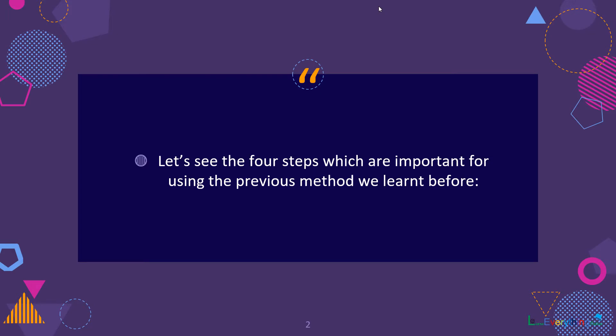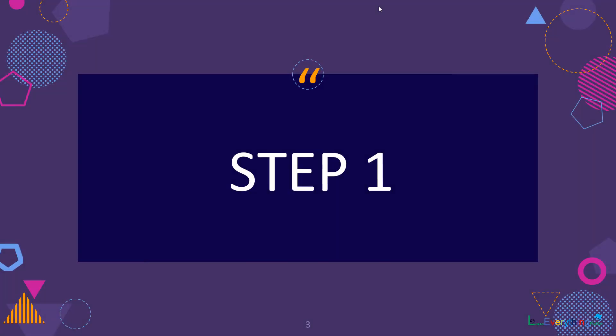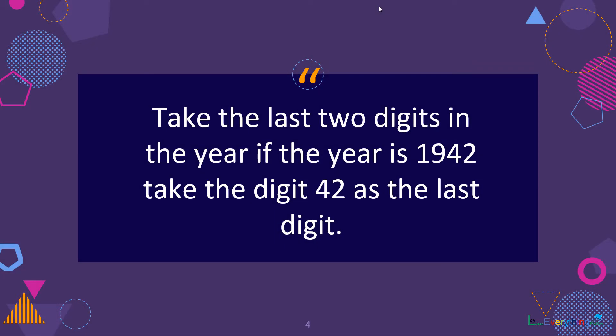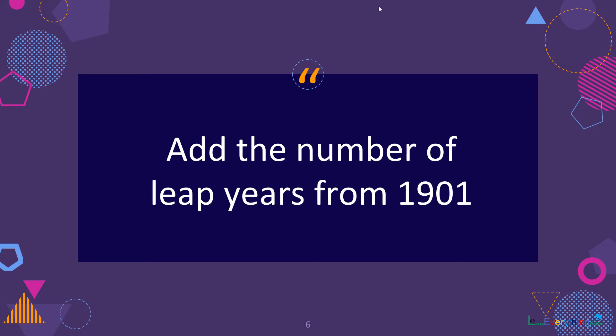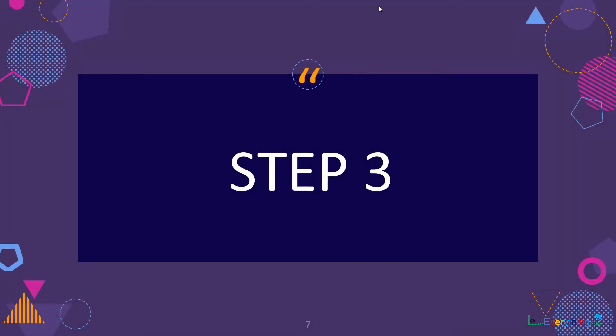Step 1: Take the last two digits in the year. If the year is 1942, take 42 as the last digits. Step 2: Add the number of leap years from 1901.